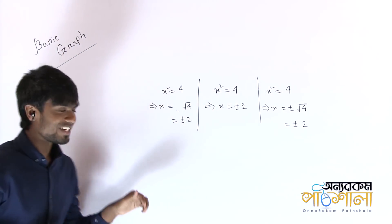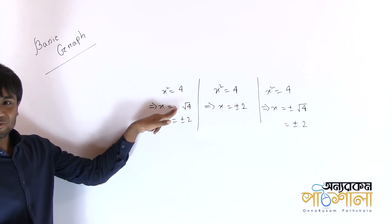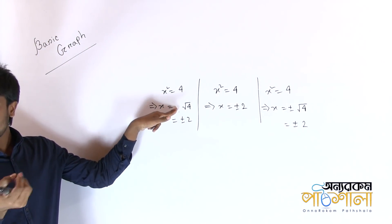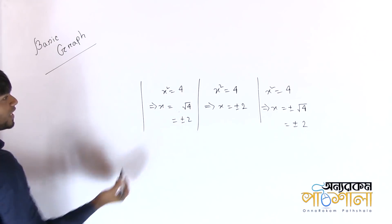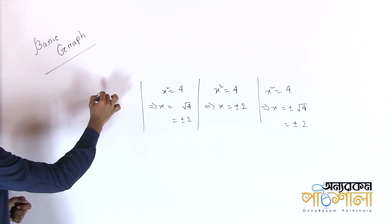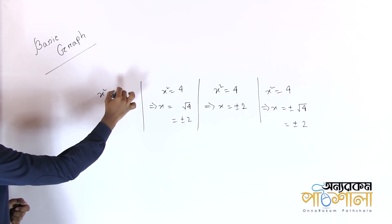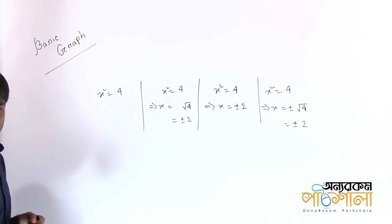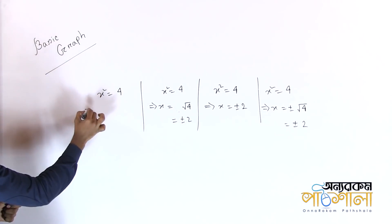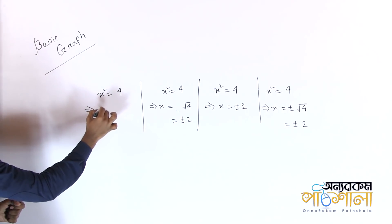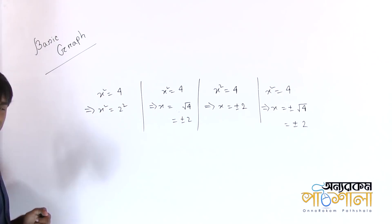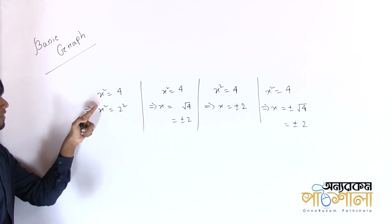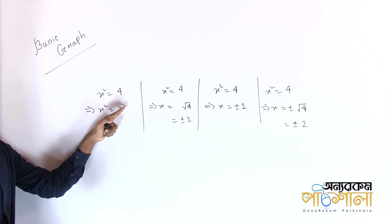The point is that the square root of 4 is not just plus. Here x squared is equal to 4. If the student says x is equal to 2 squared, I raise it to the power — but this is not correct.